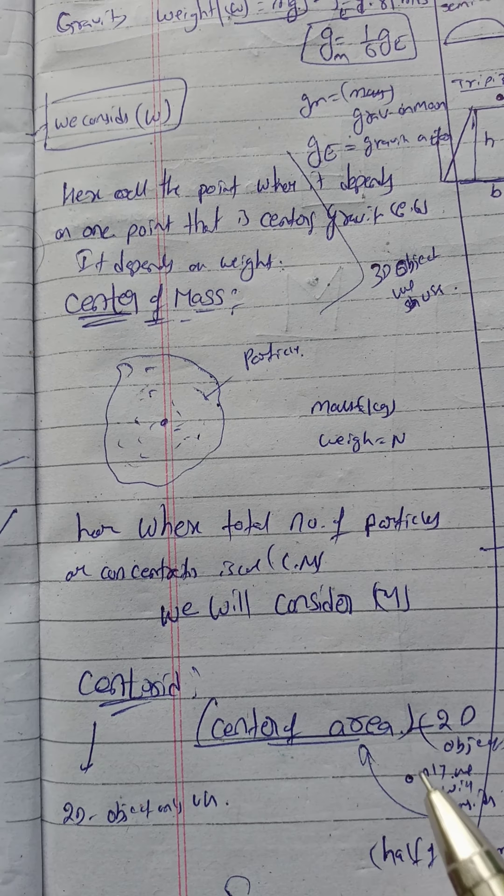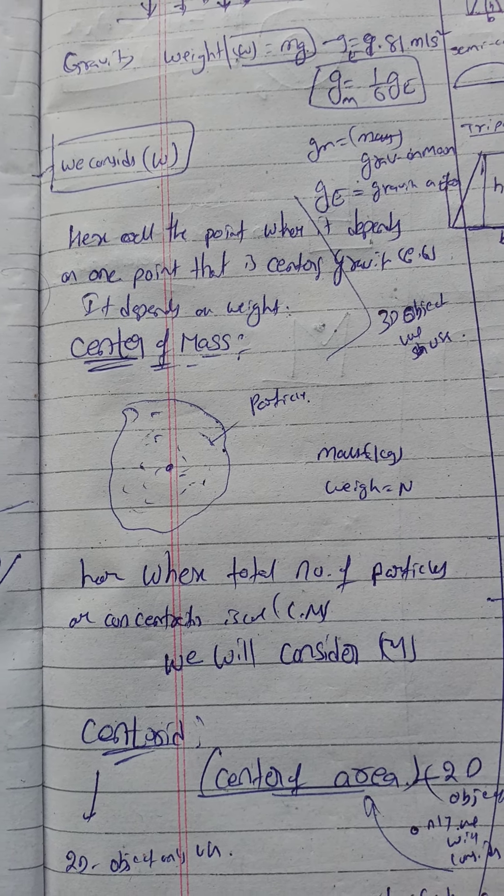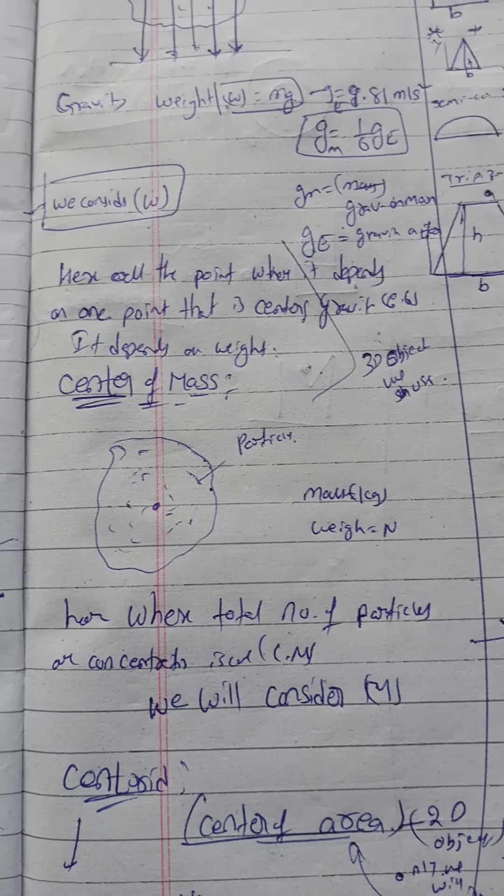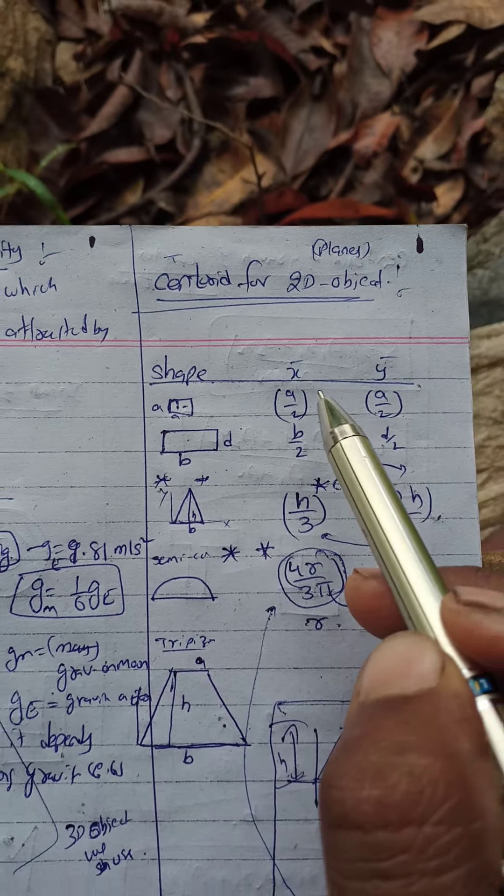For example, rectangle, square, circle, semicircle, and other similar shapes.